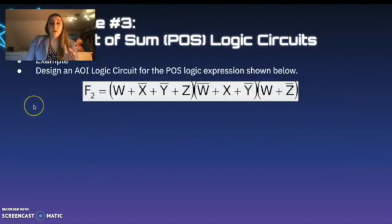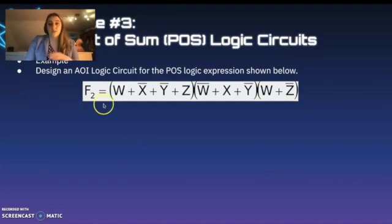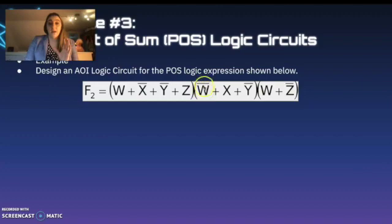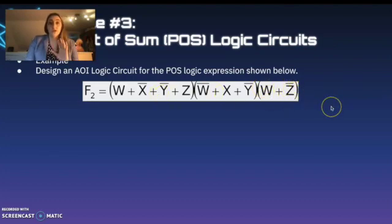Let's take a minute and look at this example. You're going to design an AOI logic circuit for F2, where F2 equals (W or X-naught or Y-naught or Z) AND (W-naught or X or Y-naught) AND (W or Z-naught). Take a minute to think about this — you might want to draw this one out. Work through this problem and then we'll go over the answer.